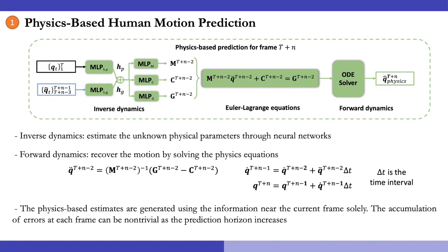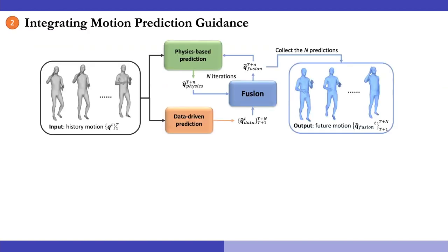Nonetheless, the physics-based estimates are generated using the information near the current frame solely. The accumulation of errors at each frame can be non-trivial as the prediction horizon increases. So, we introduce additional data-driven models and fusion models to guide the prediction in long term.